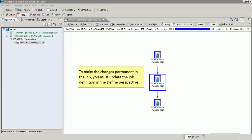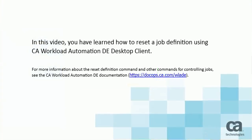To make the changes permanent in the job, you must update the job definition in the defined perspective. In this video, you have learned how to reset a job definition using CA Workload Automation DE Desktop Client.